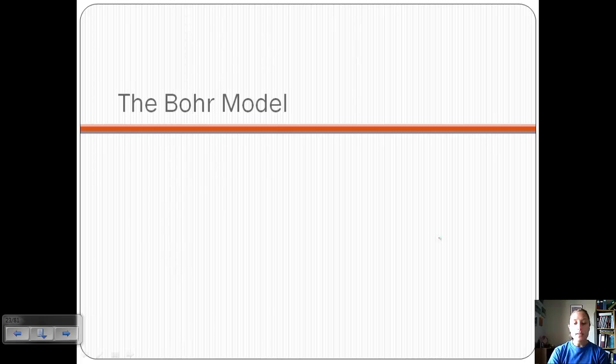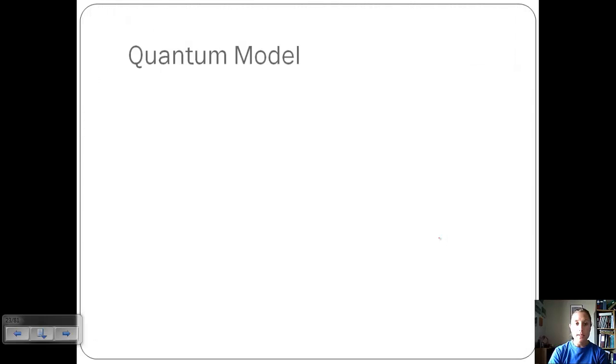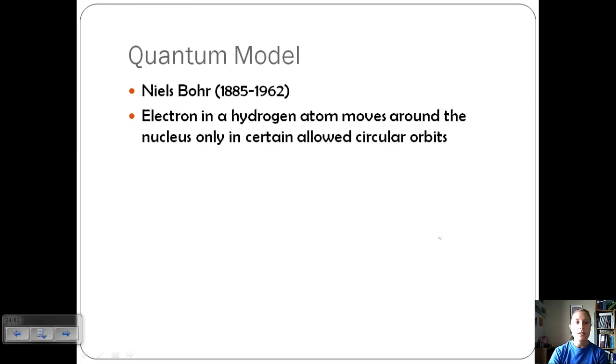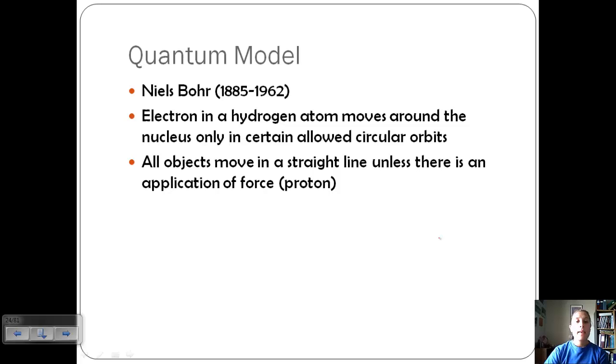Niels Bohr took this information and came up with his model of the atom. He lived from 1885 to 1962 and basically he looked at how the electron in a hydrogen atom moves around the nucleus only in certain allowed circular orbits. We said that this energy was quantized so they had to be these specific circular orbits. He also talked about how all objects move in a straight line unless there's an application of force.